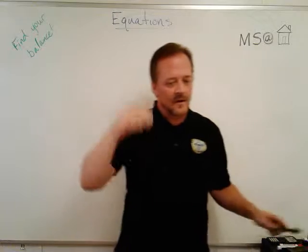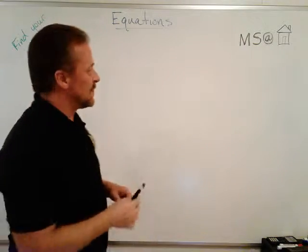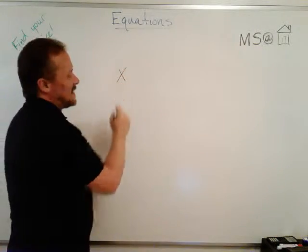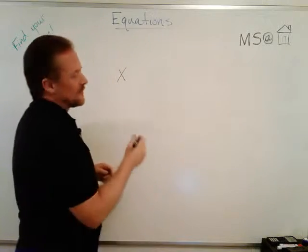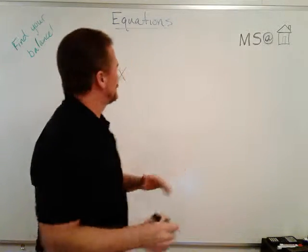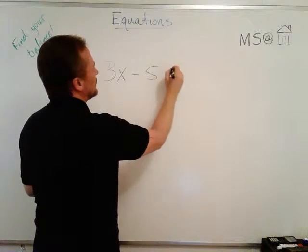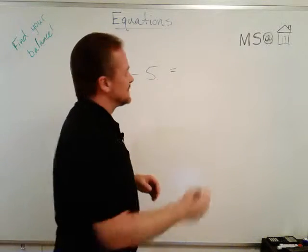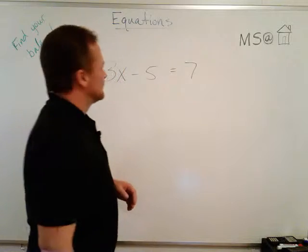Let's try one more. Dylan thinks of a number and he says I'm going to multiply it by 3 and subtract 5, and when I do that my result is 7.